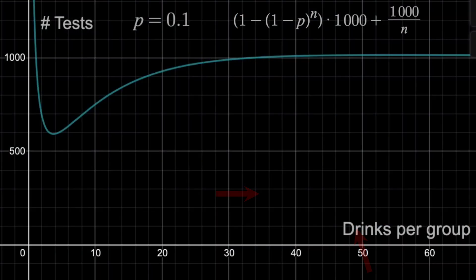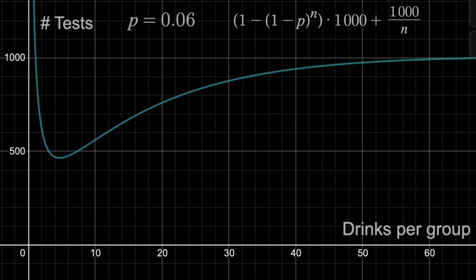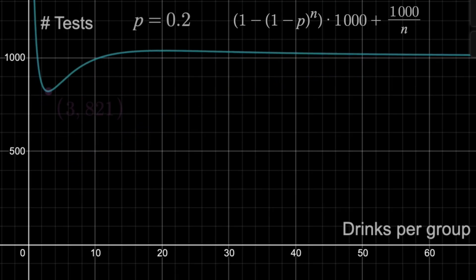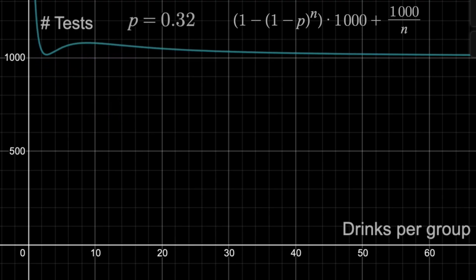If I change the percent chance of any drink being poisoned to 5%, then the new minimum is here, meaning we should split the 1,000 drinks into groups of 5 at first, and will, on average, do 426 tests. At 20%, this here's the minimum. But you'll notice that as the percentage of drinks that are poisoned goes above 30%, then our technique becomes worse than just checking each drink individually, so this isn't always the best method.